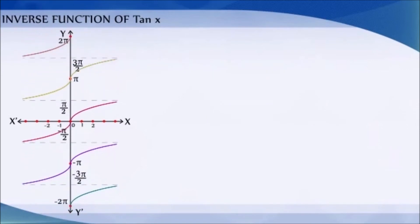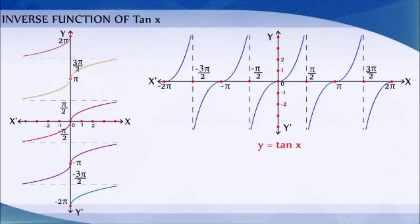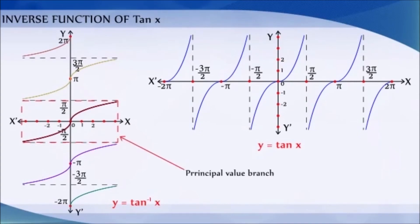These are the graphs of y = tan x and y = tan⁻¹(x). The dark portion of the graph of y = tan⁻¹(x) represents the principal value branch.